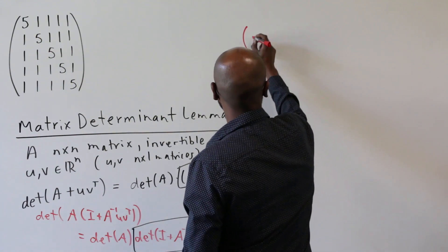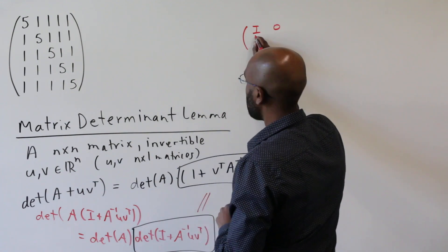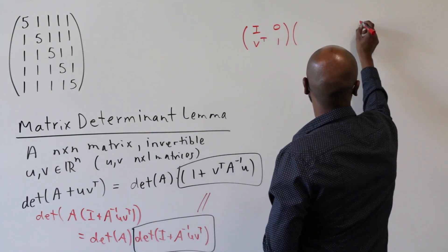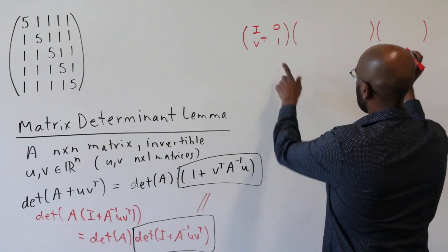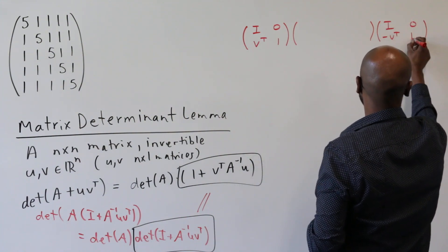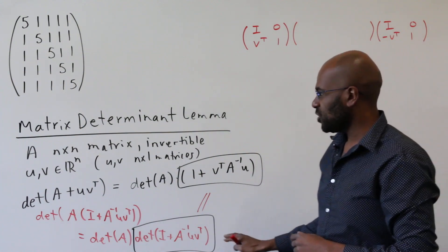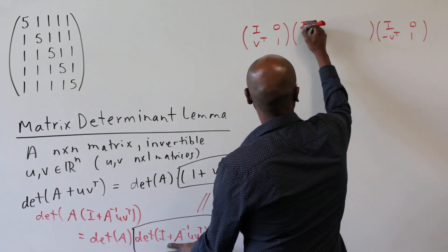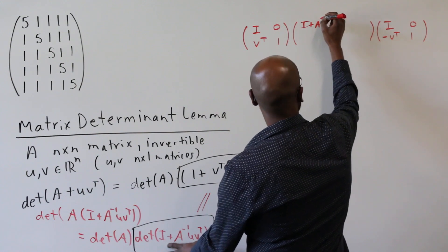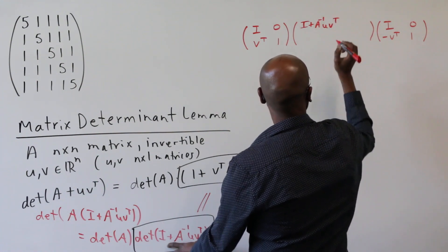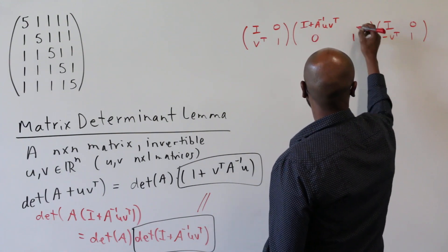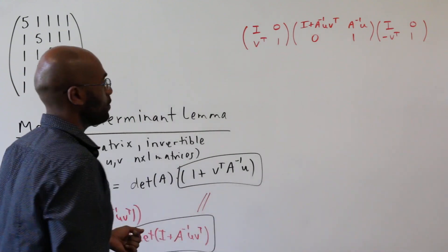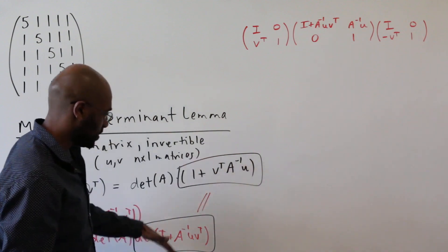We're going to prove this by considering an interesting set of matrix products. We'll look at a block matrix where the top-left block is the n by n identity I, with v^T and 1 in the bottom row, multiplied by a middle matrix, multiplied by a matrix with negative v in a corresponding position. In the middle matrix, we place I + A⁻¹·u·v^T in the upper-left block, 0 below it, 1 in the corner, and A⁻¹·u in the appropriate position.